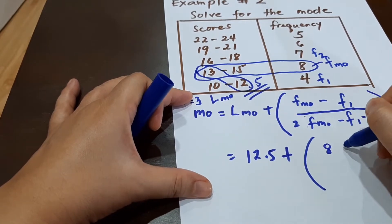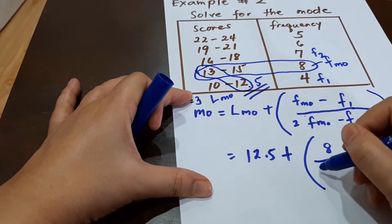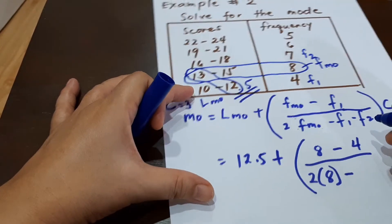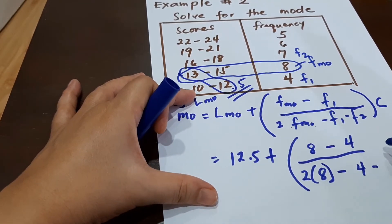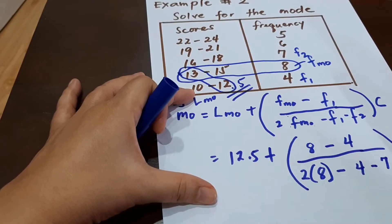which is 8 minus F sub 1, which is 4, divided by 2 times 8 minus F sub 1 minus F sub 2, which is 7, times our interval of 3.